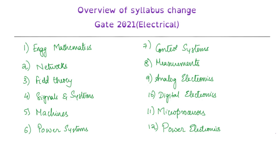One of the major syllabus changes in GATE 2021 is that microprocessors has been removed entirely. This is one major change. Field theory, electromagnetic field theory, control systems, measurements, and digital electronics — these four subjects have no change in the syllabus. For the rest of the subjects there are minor changes, which we will discuss in detail. First, I will mention some of the changes that will majorly impact your preparation.